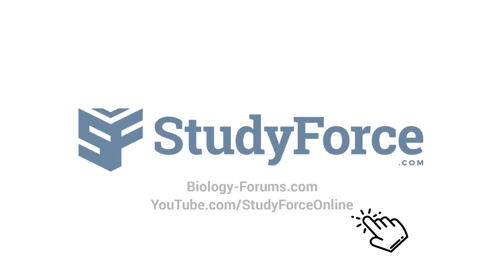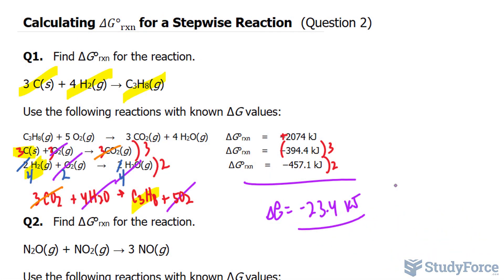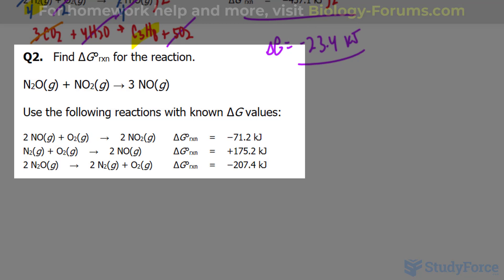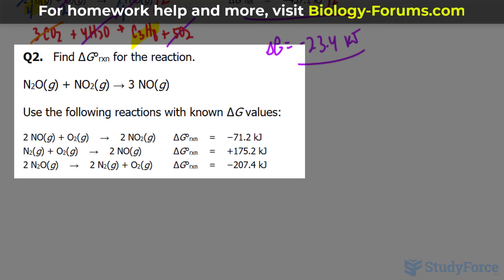Welcome back to question 2 of this series where I show you how to calculate delta G for the reaction given some stepwise reactions. This time the question reads, find delta G for the reaction shown underneath and use the following reactions with known delta G values to calculate delta G for this reaction.